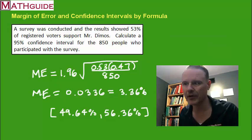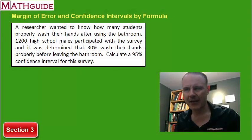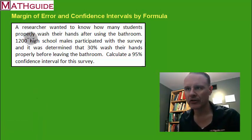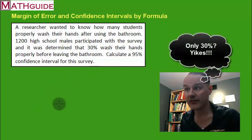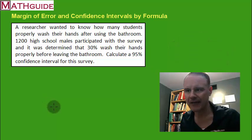Let's try one more example. Here's our second example. A researcher wanted to know, are kids washing their hands properly or not? Well, 1200 high school males participated in this survey and after the researcher spoke with these students, the researcher found out that 30 percent of them wash their hands properly. So how do we calculate a 95 percent confidence interval with this data?